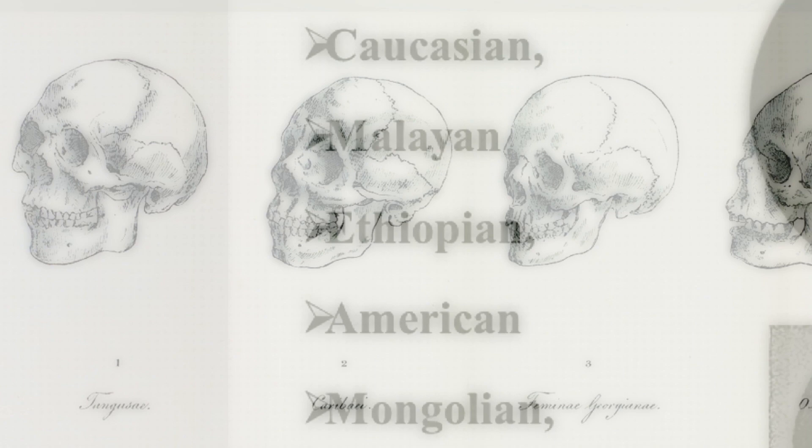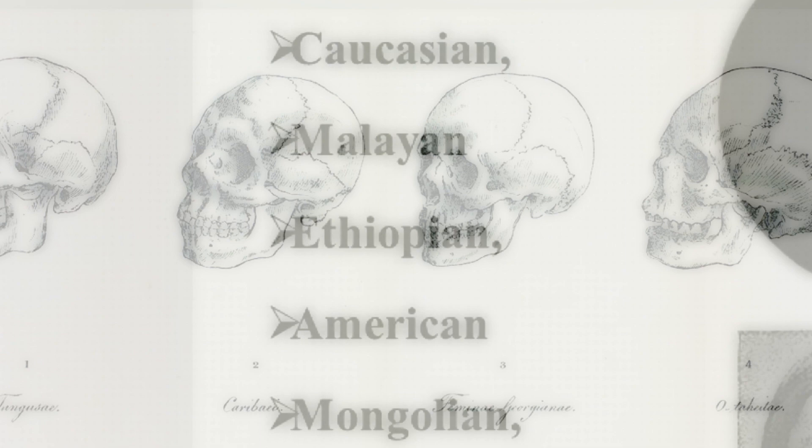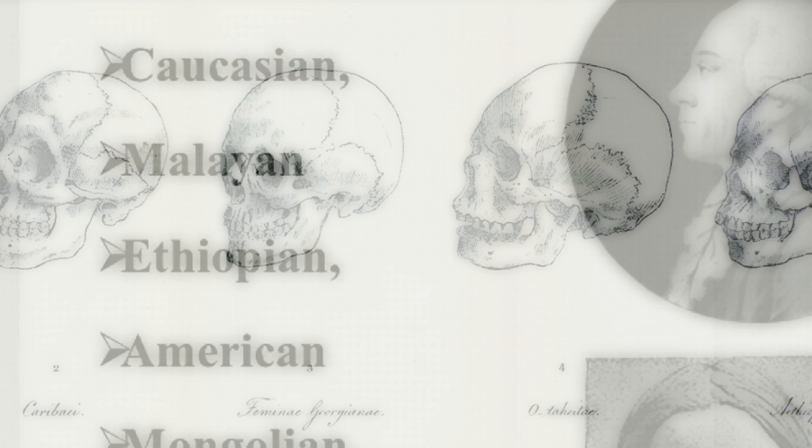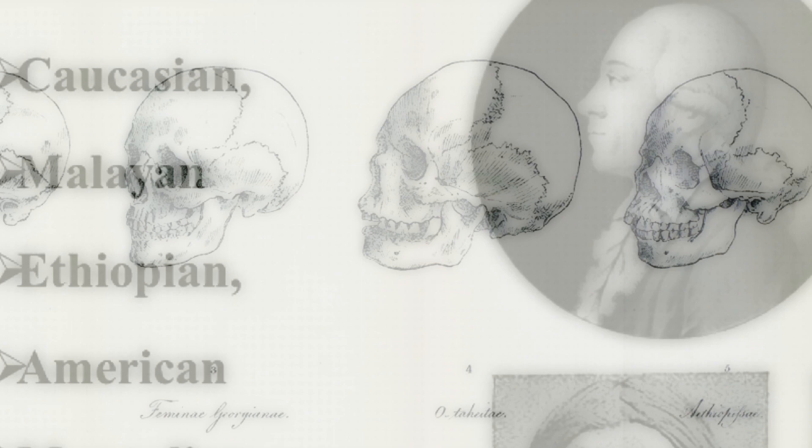Number two: the Mongolian or yellow race, including all East Asians and some Central Asians. Number three: the Malayan or brown race, including Southeast Asian and Pacific Islander. Number four: the Ethiopian or black race, including sub-Saharan Africans. Number five: the American or red race, including American Indians.